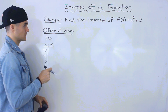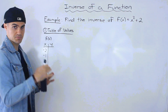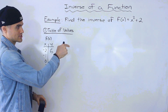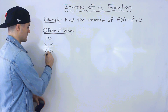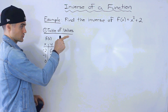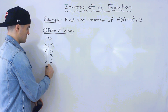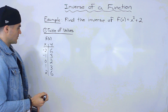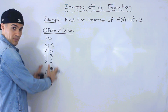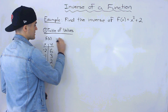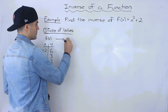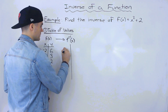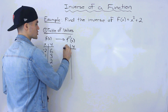If we plug these values for x into the function, negative two squared is positive four, and adding two gives us six. Negative one squared is positive one, plus two gives us three. Zero squared plus two gives us two, and then three and six. So now we have the table of values for the function.